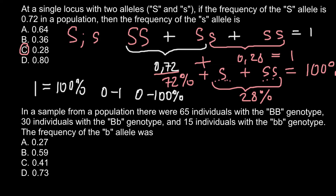Now we can move to the second problem. In a sample from a population where there are 65 individuals with homozygous dominant genotype, 30 individuals with heterozygous genotype, and 15 individuals with homozygous recessive genotype, the frequency of the recessive allele was... So now we're given a similar kind of problem, but instead of frequencies, we're given real numbers of individuals.